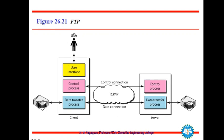The file transfer protocol works like this: the user interacts with the user interface and we have the control process to control the connection with the client — whether it is a server without a user or another computer with a user. The control process creates and manages the control connection, and after control is established, data transfer takes place — from the client's hard disk to the server's workspace, or from the server's web space to the client's hard disk.